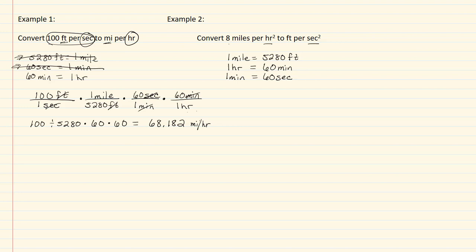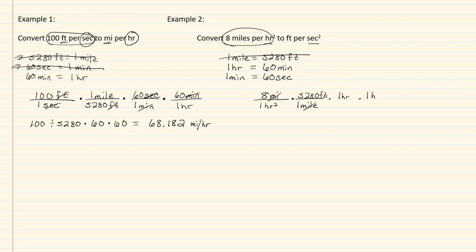Starting with what we were given — eight miles per hour squared — we write this as eight miles over one hour squared. Converting miles first: I put mile in the denominator and five thousand two hundred and eighty feet in the numerator. Miles are now gone, and I can cross that conversion off. Now I have one hour squared, which means one hour times one hour. I want hours in the top, so minutes go in the denominator, and hours squared can be crossed off.